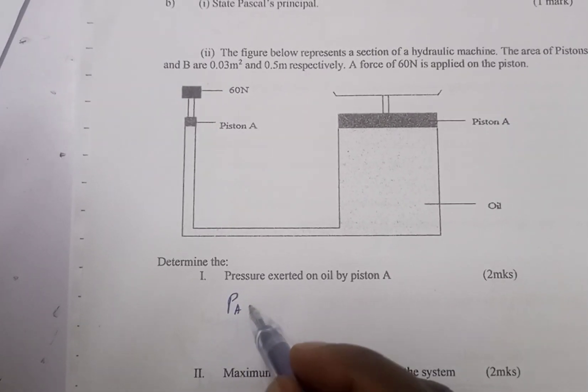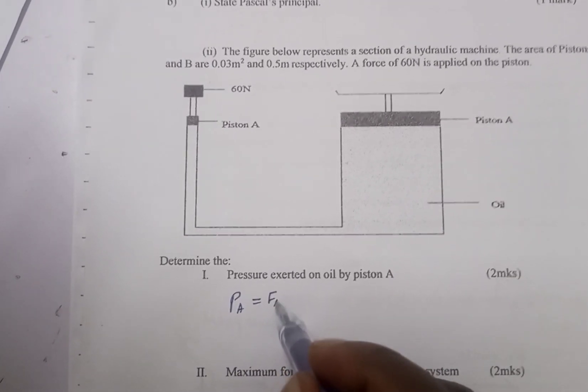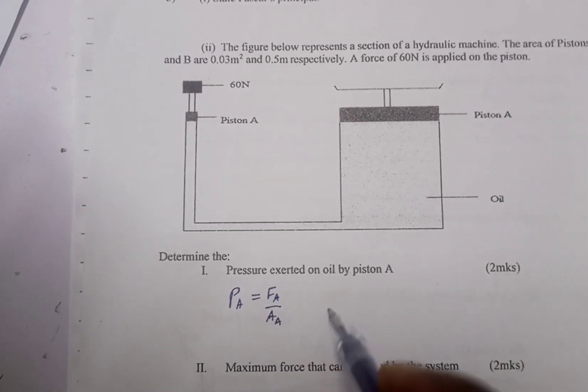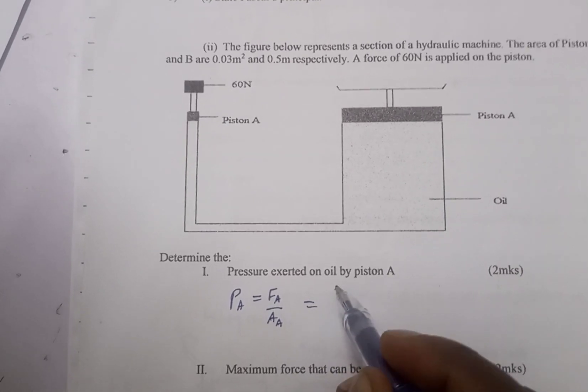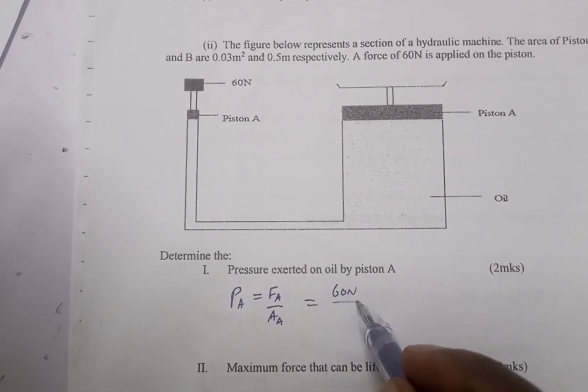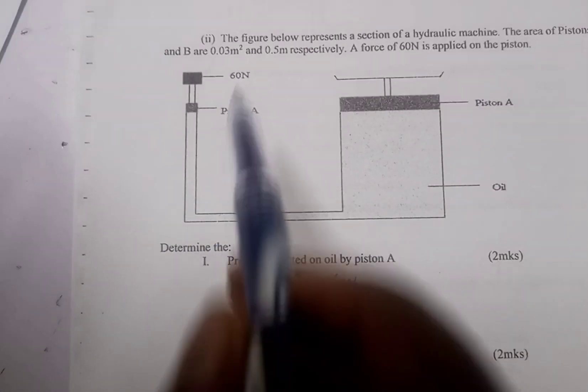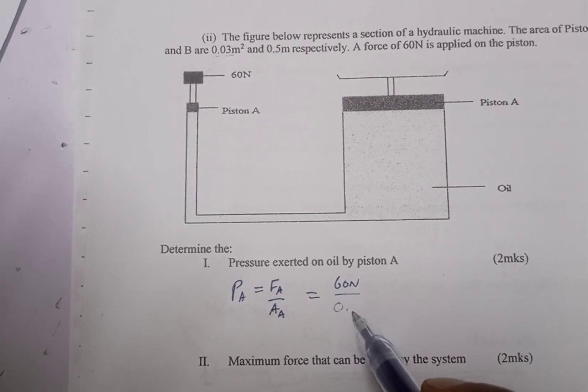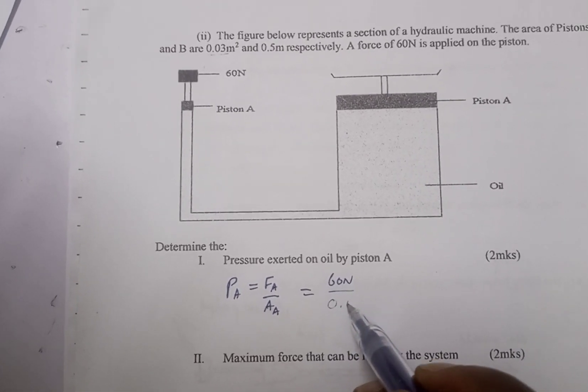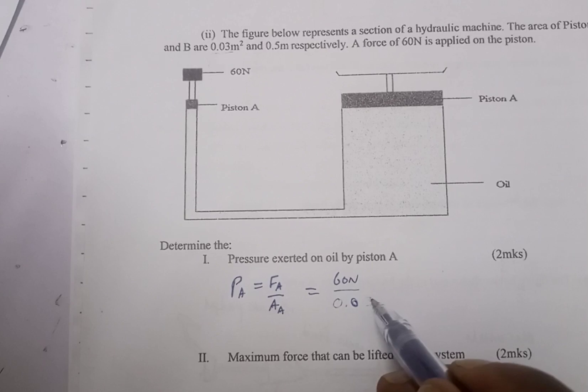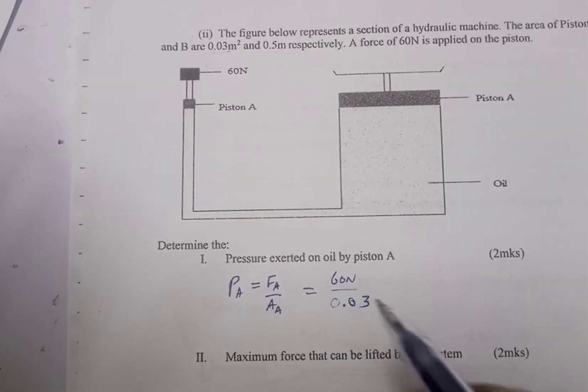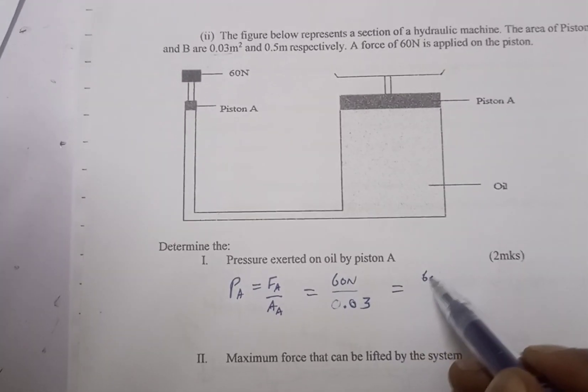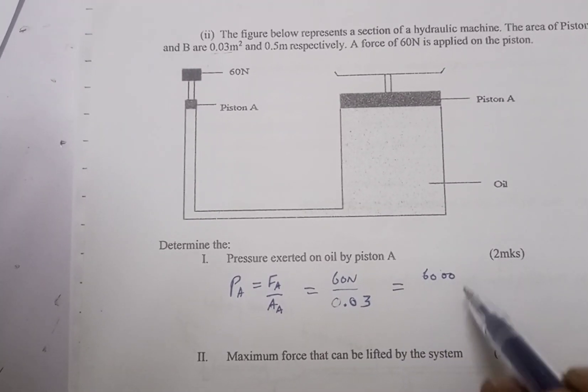So we find the pressure at A, which is force at A divided by area at A. The force at A is 60N, so 60 divided by 0.03. That would give us the pressure experienced at point A: 60 divided by 0.03, which gives us 6000 divided by 3, we get 2000 newton per meter squared.